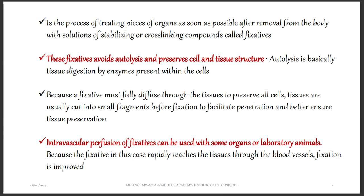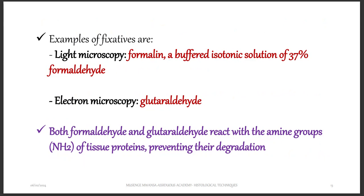An assignment: find out which blood vessels can be used to inject formalin to preserve a dead body — this has appeared in exams. For light microscopy, the fixative used is formalin — a buffered solution containing 37% formaldehyde. This is high yield: the answer is 37% formaldehyde, not 10%. For the electron microscope, the fixative used is glutaraldehyde.